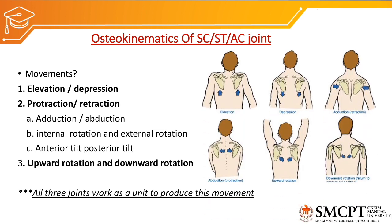In the picture you can see elevation means the scapula and the clavicle move upward or superiorly. Depression means the scapula and the clavicle move downward. Adduction means the scapula is moving towards the spine, and abduction means the scapula is moving away from the midline or the spine. Upward rotation of the scapula shows the inferior angle moving away from the spine whereas the superior angle is coming towards the spine. Downward rotation means the inferior angle is moving toward the spine whereas the superior angle is moving away from the spine.